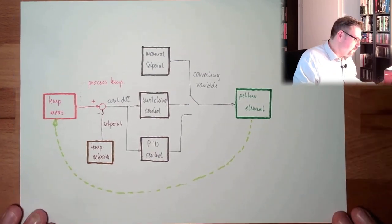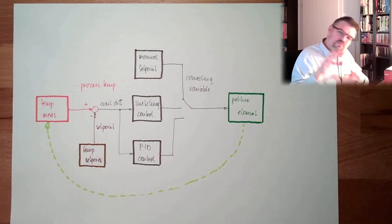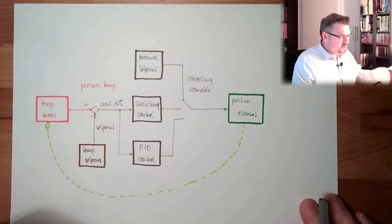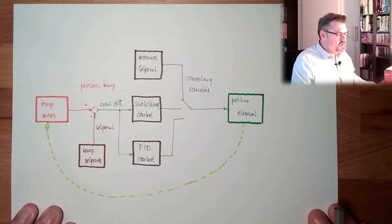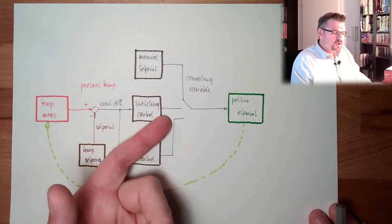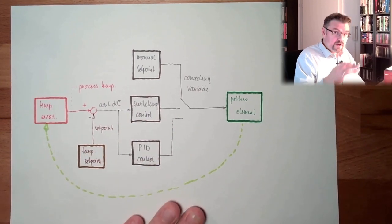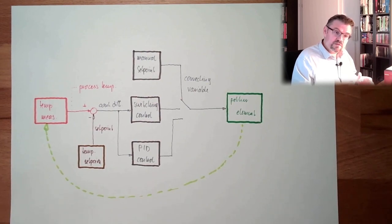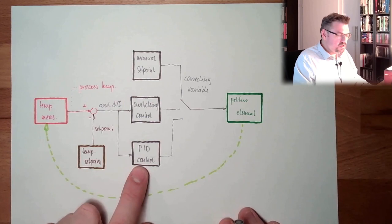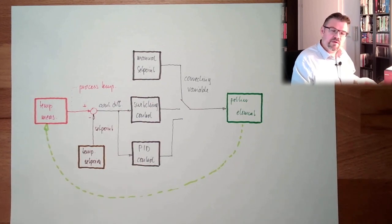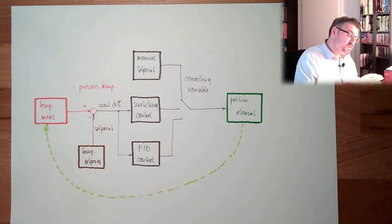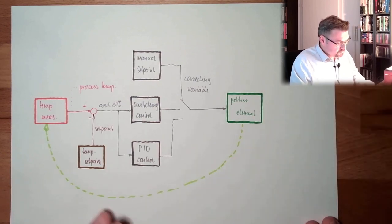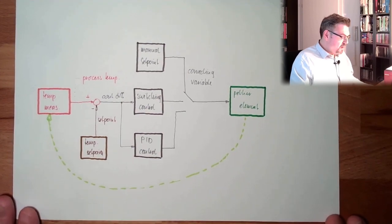And here we have the controller difference. The PID controller and the switching controller are reacting on the controller difference. There are videos about this - you can watch it. So I want to have a manual mode, a switching controller, a PID controller - I want this to be selectable. The switching controller is just switching: do nothing, cool, or heat - so plus 100%, minus 100%, or 0%. And the PID controller shall be something between minus 100% and plus 100%. Minus 100% means 100% cooling, plus 100% means 100% heating, for the Peltier element.